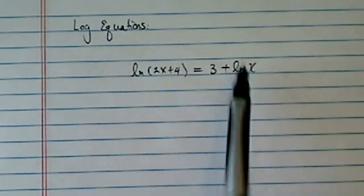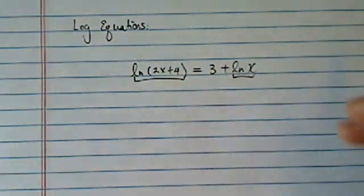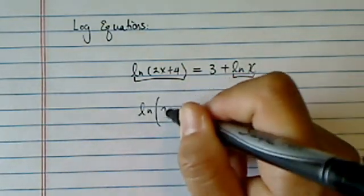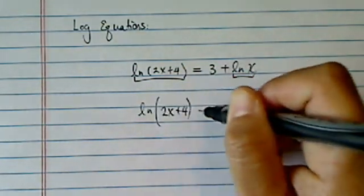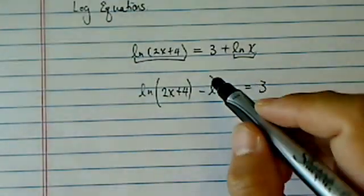Here we have log split up on both sides. First thing you want to do with log equations, you want to combine them. Think of them as lost siblings. Plus 4 here minus natural log of x equal to 3. Once you get the logs on both sides,